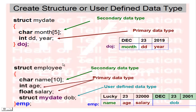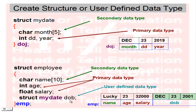Now how to use a structure inside another structure. Here I will create struct employee. The employee has a character array name — this is a secondary data type — integer age and float salary as primary data types. Now I use struct my_date because my_date is a user-defined data type not available natively in C. So struct my_date variable dob for date of birth — this is a user-defined data type variable. This is the complete structure of employee: character name, integer salary, and date of birth.